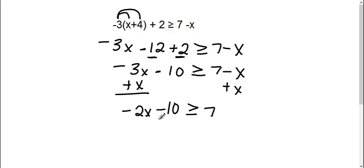Then I need to move this 10. It's a minus 10, so I'm going to add 10 to both sides. Therefore we get negative 2x is greater than or equal to 17.